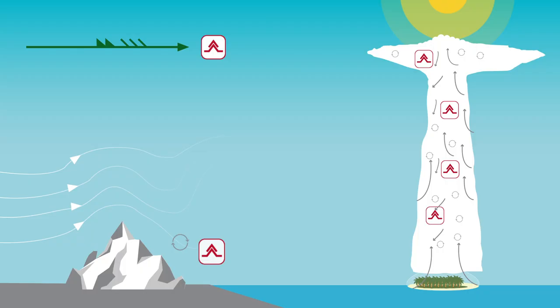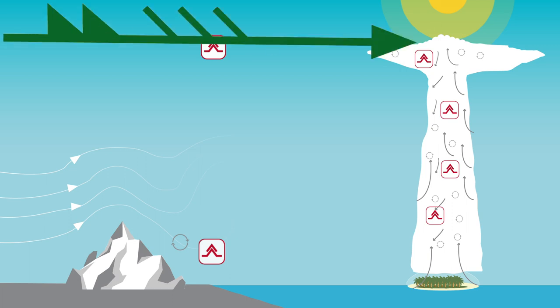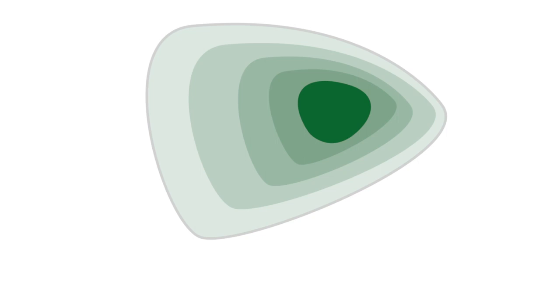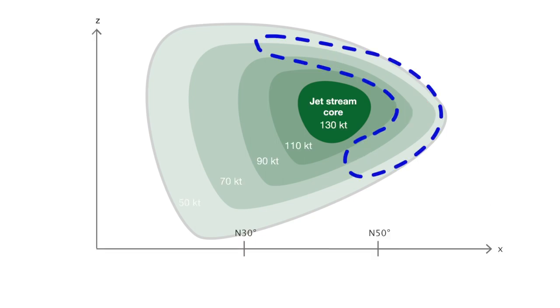Because of their nature, jet streams will create turbulence and abrupt changes of wind direction and velocity. Associated to the jet stream, there may be clear air turbulence, which is moderate to severe turbulence, located above flight level 150, without the presence of convective clouds. Beware that turbulence is more intense on the polar side and slightly above the core of a jet stream.